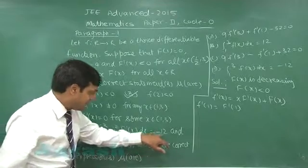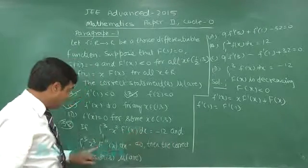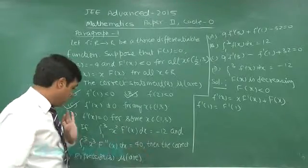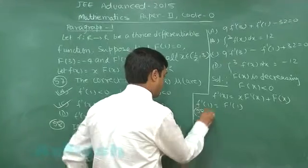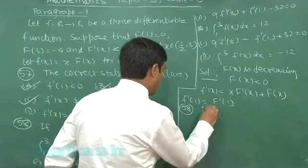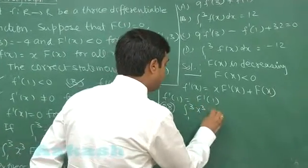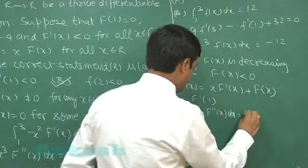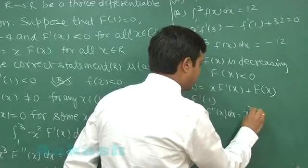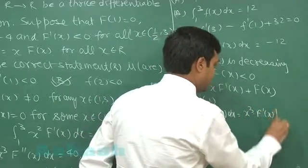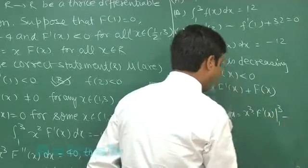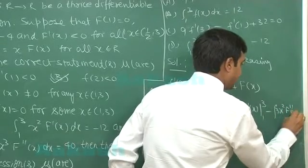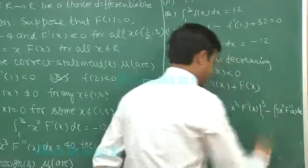Let us talk about the next one. Integral 1 to 3 x square f dash x dx is minus 12. Integral 1 to 3 x cube f double dash x dx equals x cube into f dash x minus integral 3 x square f dash x dx.